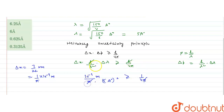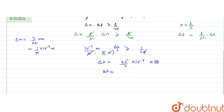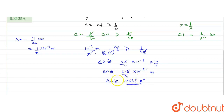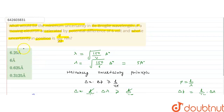Pi cancels with pi, so we get delta lambda equal to 25 by 4 into 10 raised to the power minus 9. Converting to angstroms by multiplying and dividing by 10, that gives 2.5 by 4 into 10 raised to the power minus 10 meters. Therefore delta lambda is greater than or equal to 0.625 angstroms. The uncertainty in de Broglie wavelength is greater than or equal to 0.625 angstroms, so the correct option is 0.625 angstroms, option C.